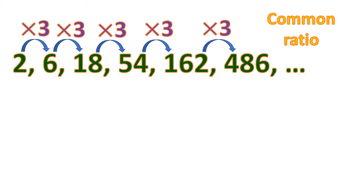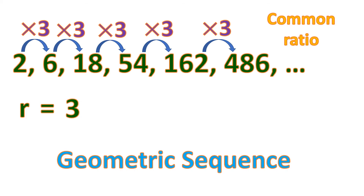Times 3, times 3, and so on — that is the common ratio. It must be uniform; if one is not the same, then it is no longer a common ratio. The common ratio is denoted by r, so in this case r equals positive 3. If a sequence has a common ratio, it is what you call a geometric sequence.